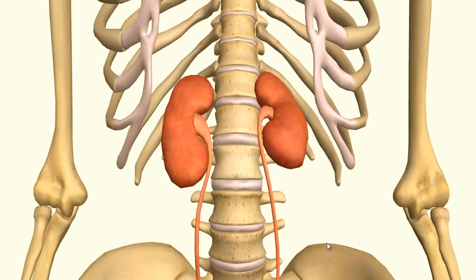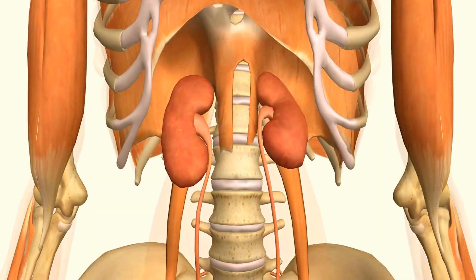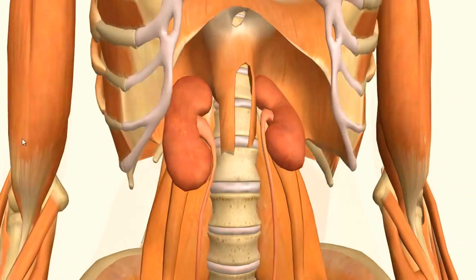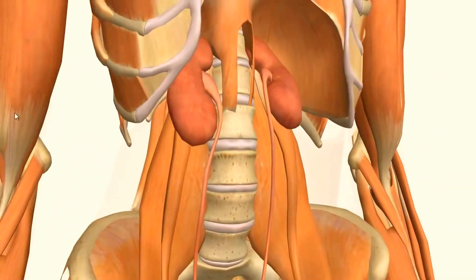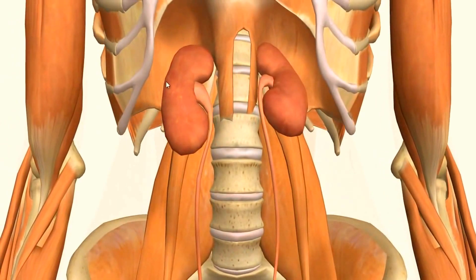Let's bring some other structures in and take a look at the relative location of the kidneys. You can see here that they sit on the posterior abdominal wall and they sit on either side of the vertebra.